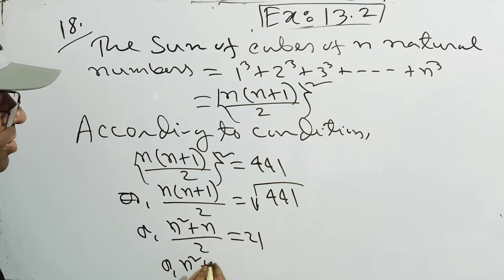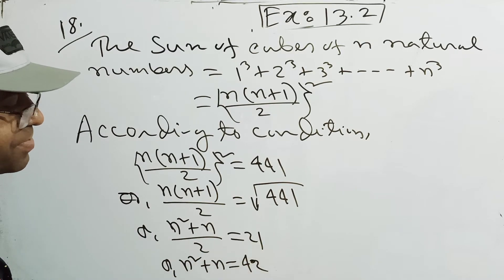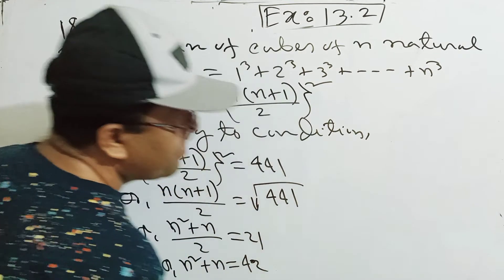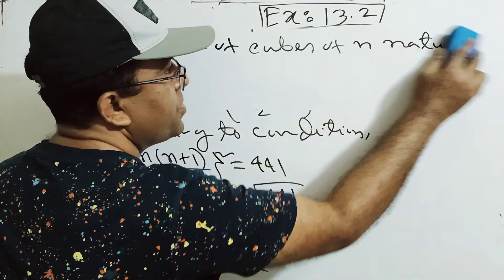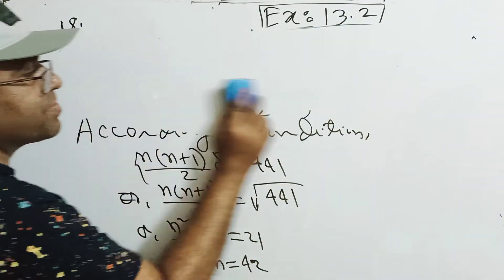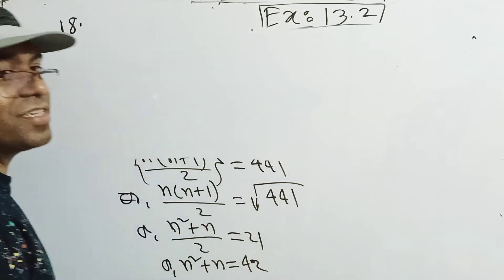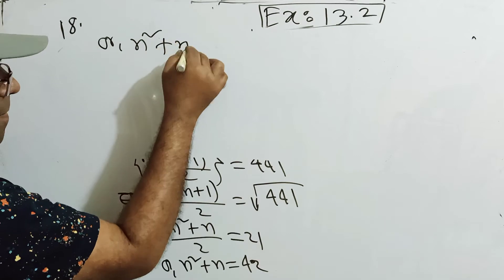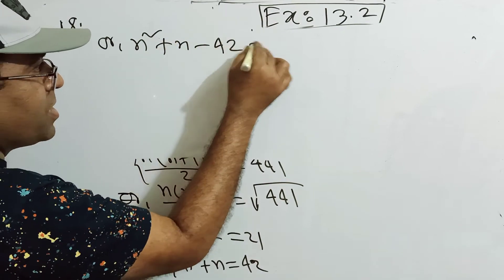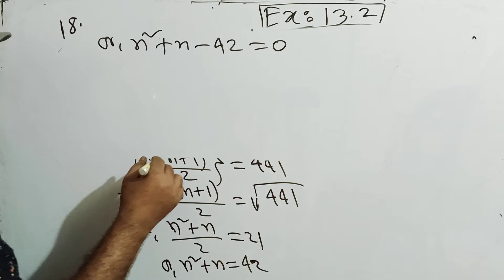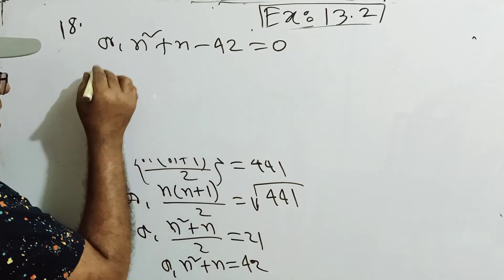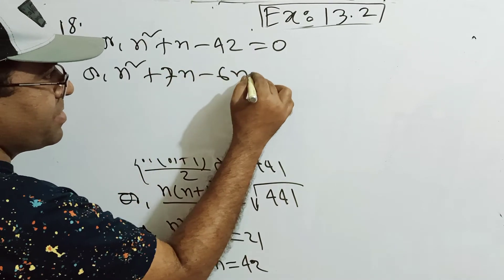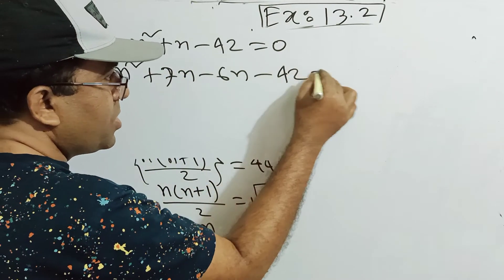So N squared plus N equals 42. Rearranging: N squared plus 7N minus 6N minus 42 equals to 0.